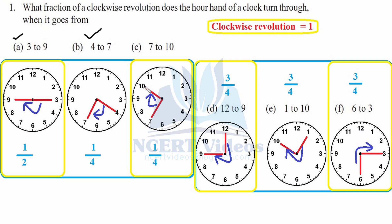This is the second, third, and fourth part. For part d, from 12 to 9: from 12 to 6 it is half of the revolution, and then 90 degrees more, that is three-fourths of the whole revolution. Part e: take 1 to 12 and 10 to 9, so the answer is again 3 by 4. Part f: from 6 to 3 — from 6 to 12 is opposite, that means two parts, and from 12 to 3 is one more part, so it is 3 by 4.